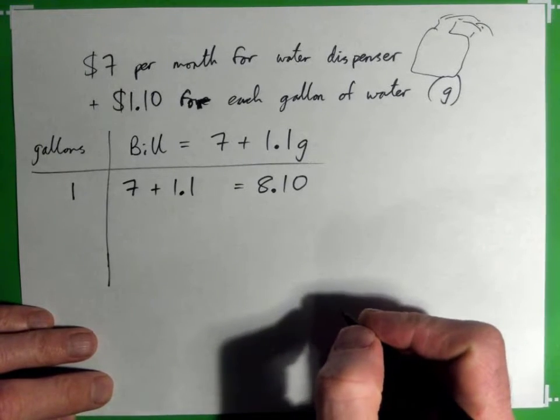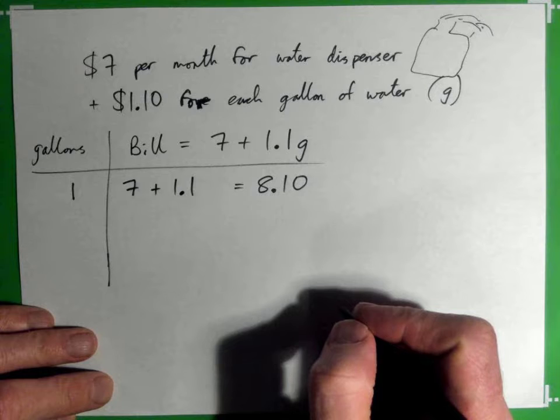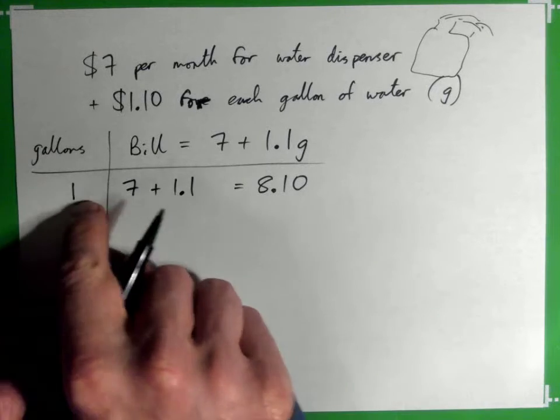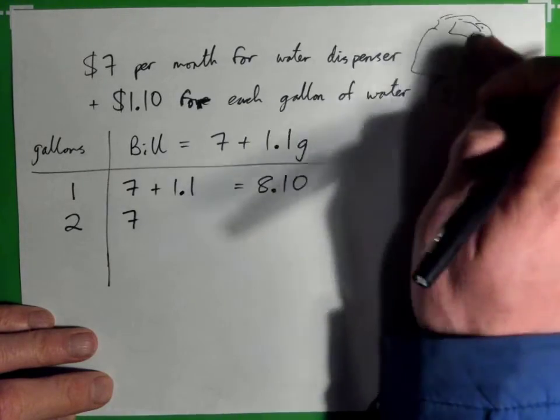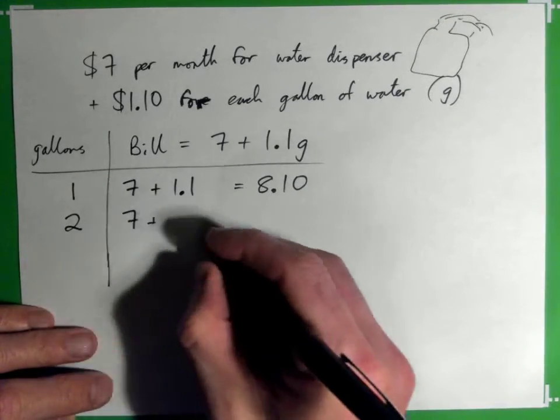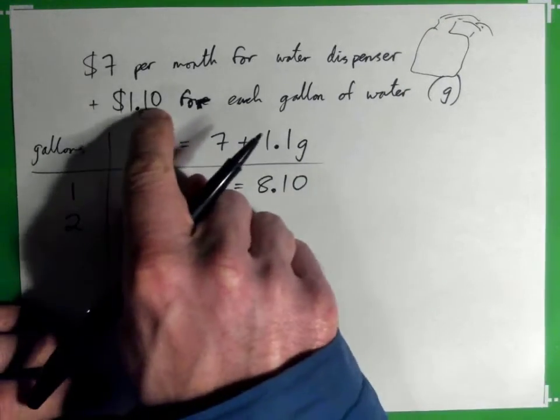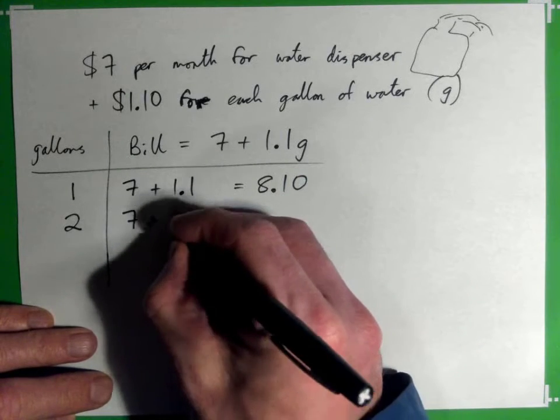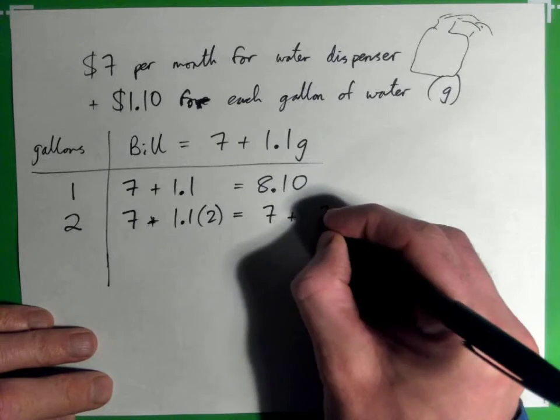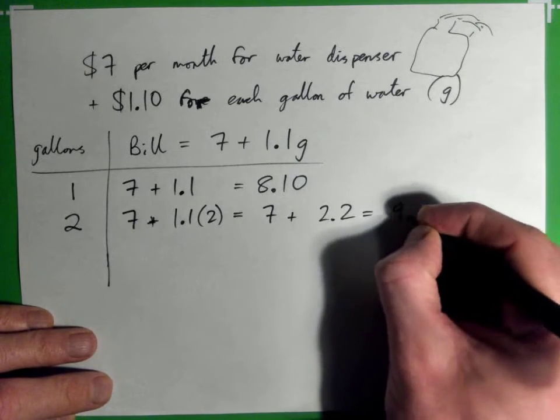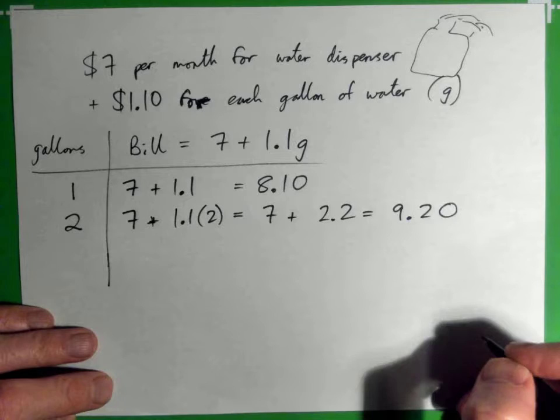If you had two gallons of water, it'd be $7 for the dispenser plus two gallons, and each gallon is $1.10, so that's $1.10 times 2. So that's 7 + 2.2, which is 9.2 or $9.20 for two gallons. Does that make sense?